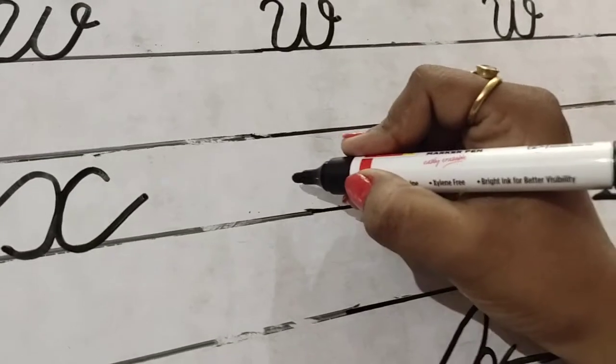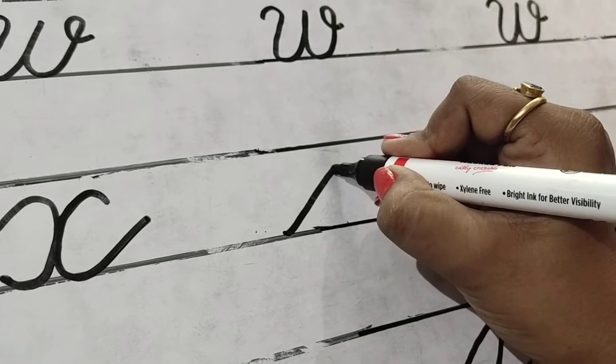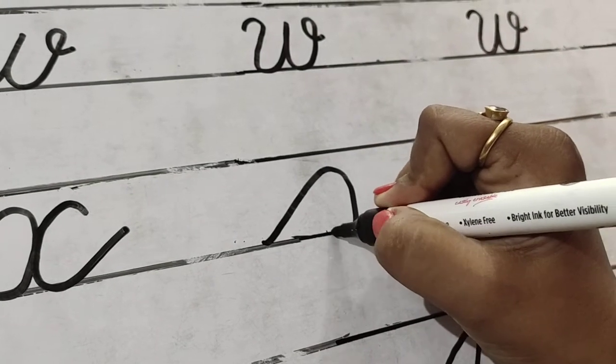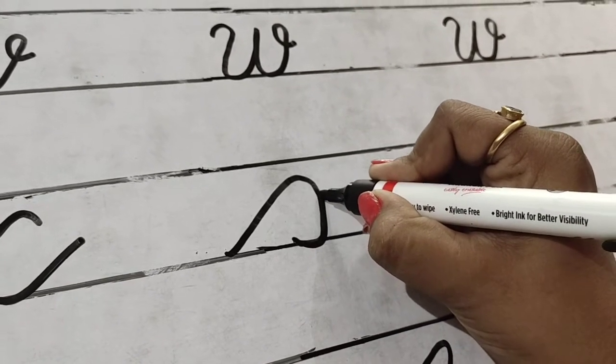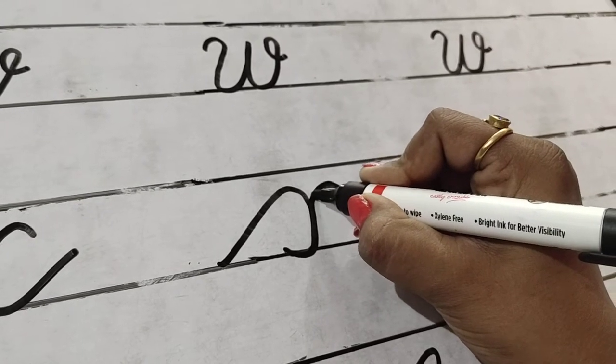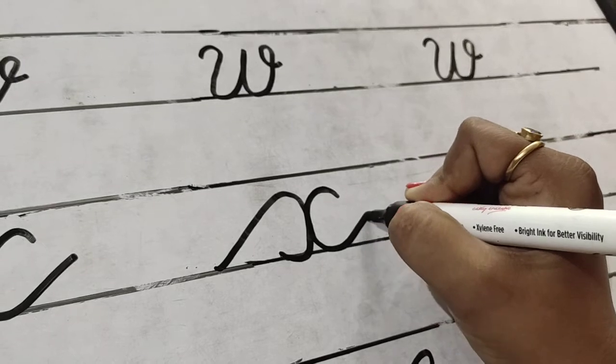Phir se lower line ko touch kare, slanting line upar le jayenge. Isko ghumake reverse C bana, C ki body par vaapis chalenge, we will separate here, we will make another C, we will touch the center.